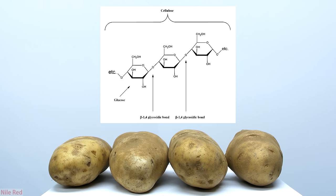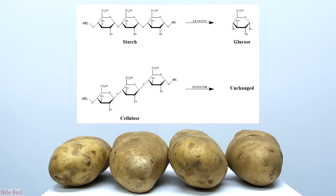I just wanted to quickly mention cellulose, which is another plant glucose polymer, but instead of being connected by alpha-1-4 bonds, they're connected by beta-1-4 glycosidic bonds. Humans and almost all animals have the enzymes to break the alpha-1-4 bonds of starch and liberate the glucose units, but we don't have the proper enzymes to break the beta-1-4 bonds of cellulose.